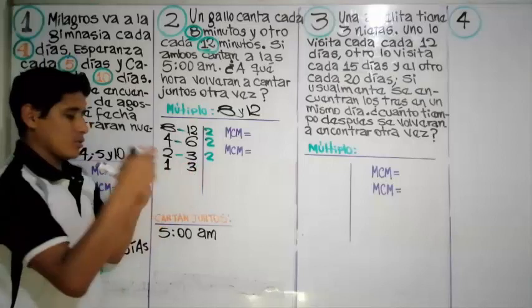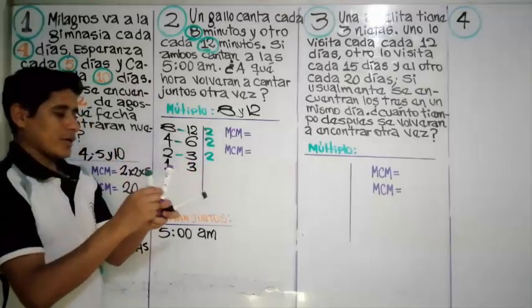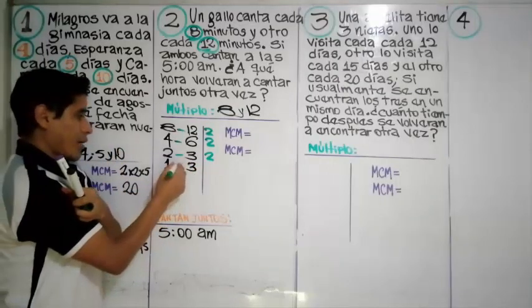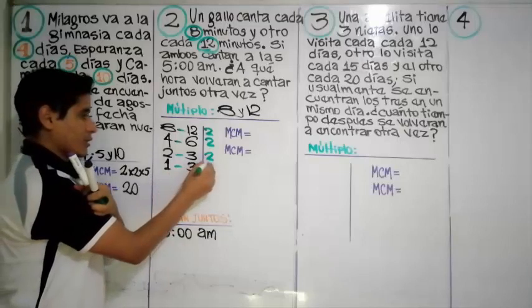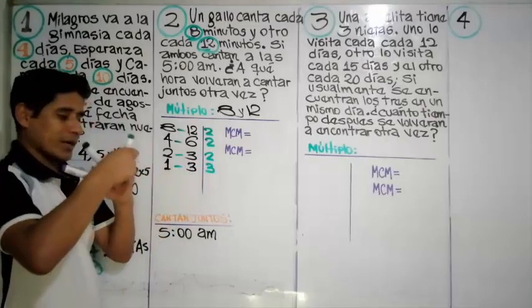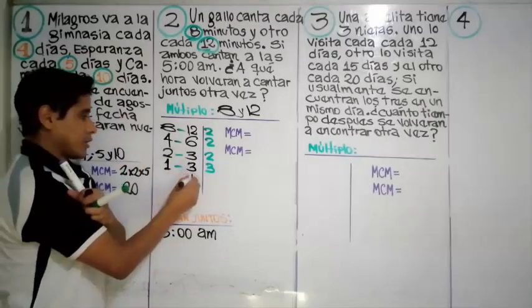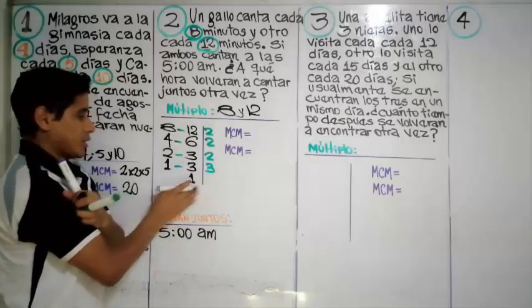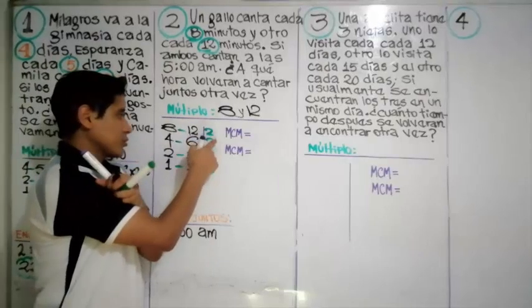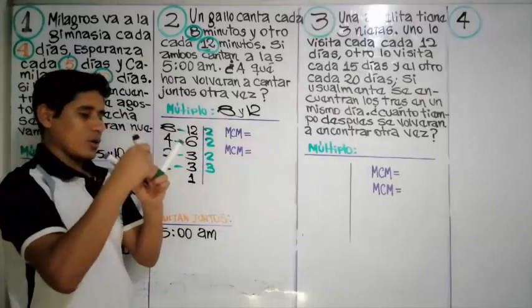Nos queda tres, así que le sacamos entre tres. El mínimo común múltiplo va a ser dos por dos por dos por tres.